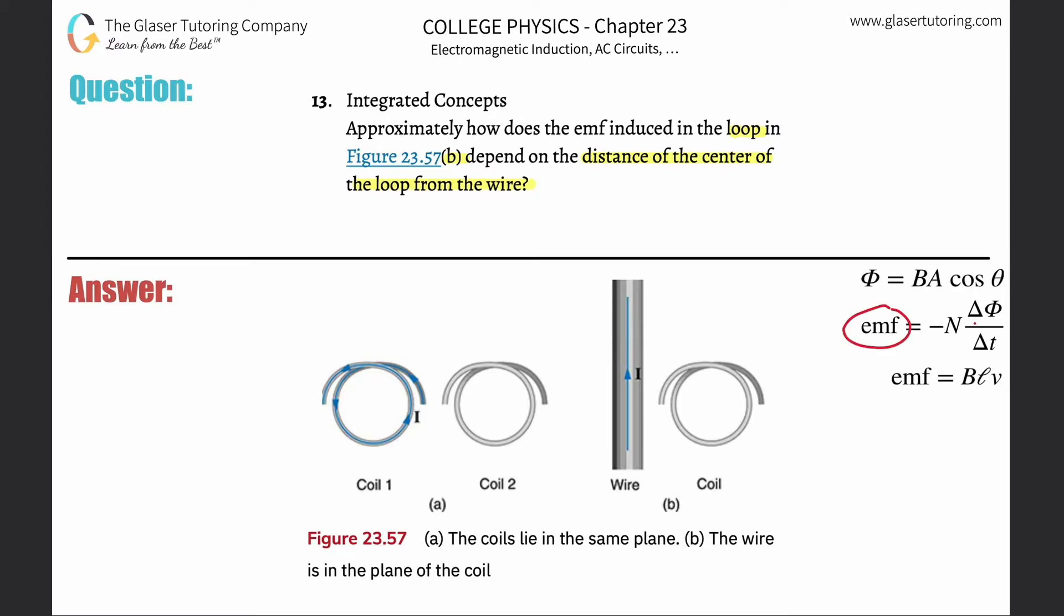And we know that the changing magnetic flux here is a function of either changing magnetic field, changing area, or changing angle. In this problem, the only thing that's changing is going to be the strength of the magnetic field.